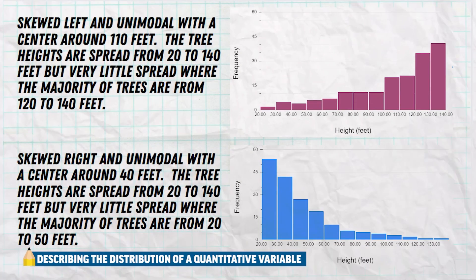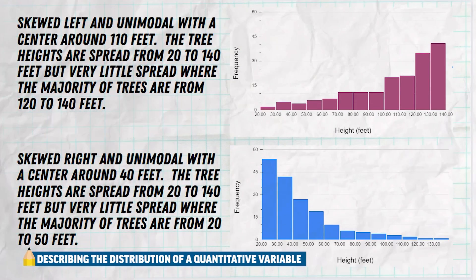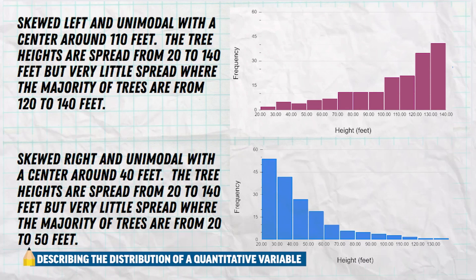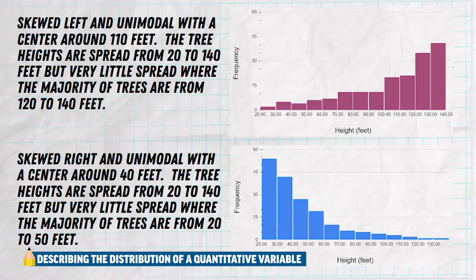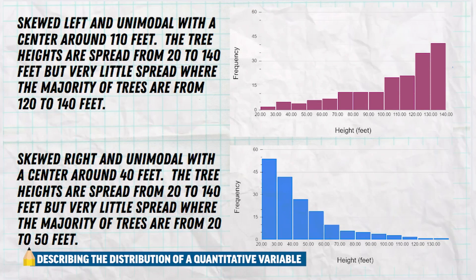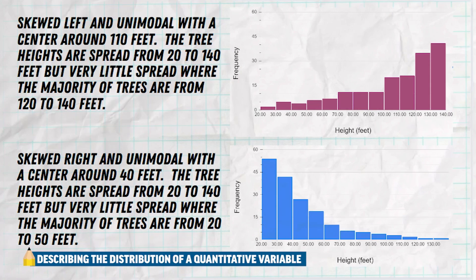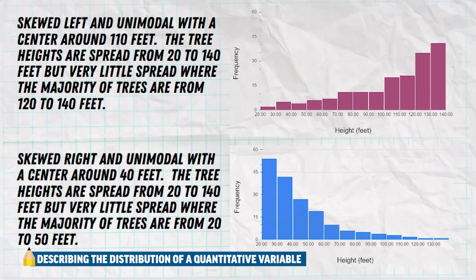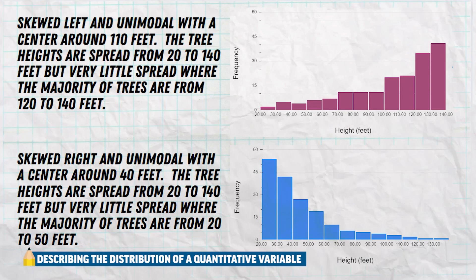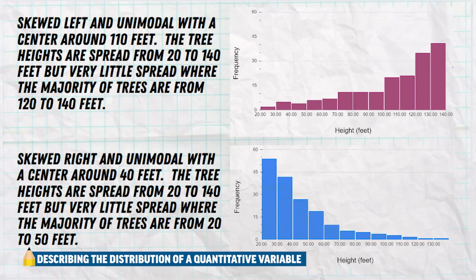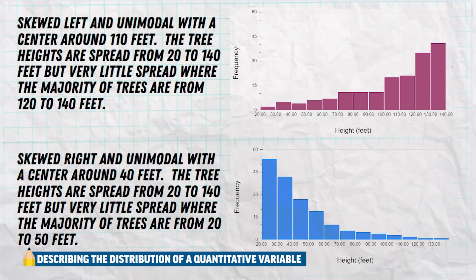Here we see two more samples of trees. The one in purple is clearly skewed to the left, where the majority of the data is on the right, so the center is probably around 120 to 110 feet. And on the one in blue, we see it skewed to the right, which gives us the center of maybe 35 to 40 feet. They both have similar spreads, but the majority of the data in purple is at the higher end, where the majority of the data in the blue is at the lower end.